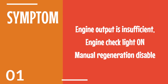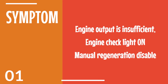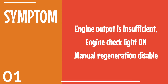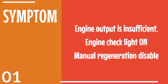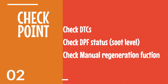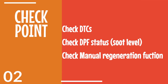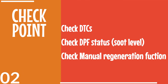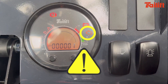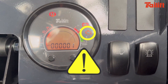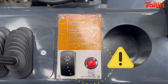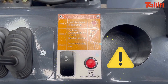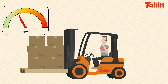What symptom is happening when DPF soot level is too high? Check the DDC code, DPF status, and DPF regeneration function. When the check engine light is flashing, the parked regeneration request light is off, and you feel the engine output is insufficient — or what we call derated.